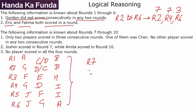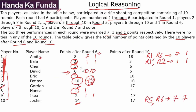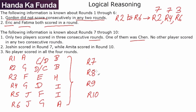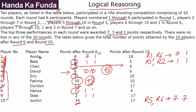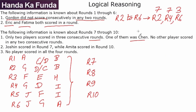Let's check what happens in rounds 7 to 10. Only two players scored in 3 consecutive rounds — one of them was Chen. Chen went from 3 to 6, a gain of 3. Chen cannot take part in round 7 because round 7 has players 7 through 2. Chen can take part in rounds 8, 9 and 10. So Chen's three scores of 1, 1 and 1 must have come in rounds 8, 9 and 10 — that is how Chen scored in 3 consecutive rounds.